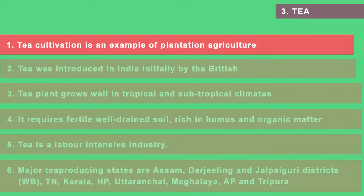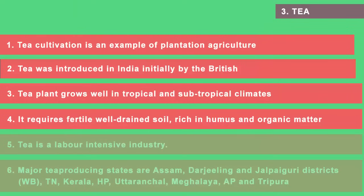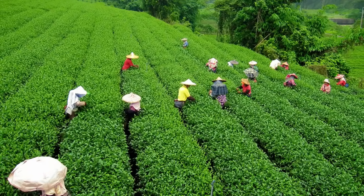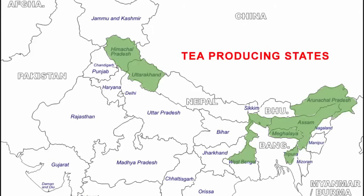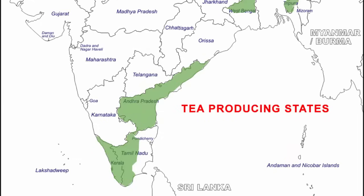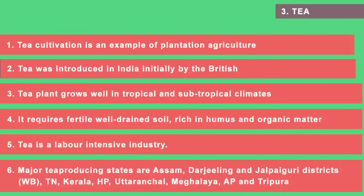Tea is an example of plantation agriculture. The British introduced tea first in India, though today most tea plantations are owned by Indians. Tea plants grow well in tropical and subtropical climates but need deep, fertile soil rich in humus and organic matter, a warm and moist climate, and frequent light shower rainfall. Tea is a labor-intensive industry. Major tea-producing states are Assam, the hills of Darjeeling and Jalpaiguri districts of West Bengal, Tamil Nadu and Kerala, with other contributors including Himachal Pradesh, Uttaranchal, Meghalaya, Andhra Pradesh and Tripura.